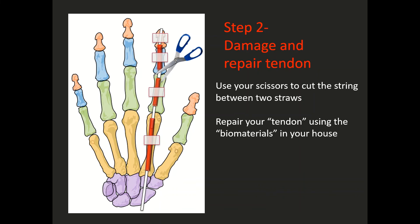So there's no wrong answer to this. You can use a paper clip, a pipe cleaner, a rubber band, a lollipop stick. Think about what material would be best to fix that tendon in order to make that hand function properly again. Do you want your finger to stay stiff, or do you want it to bend?